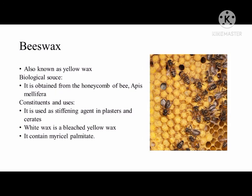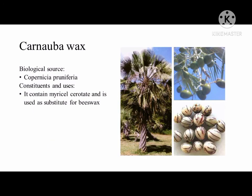Another is beeswax, also known as yellow wax, obtained from the honeycomb of the bee, Apis mellifera. It is used as a stiffening agent in plasters and cerates, and contains myricyl palmitate. White wax is a bleached yellow wax and is also used as an ointment base. Lastly is carnauba wax with biological source Copernicia prunifera. It contains myricyl cerotate and is used as a substitute for beeswax.